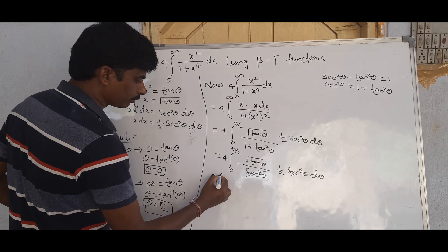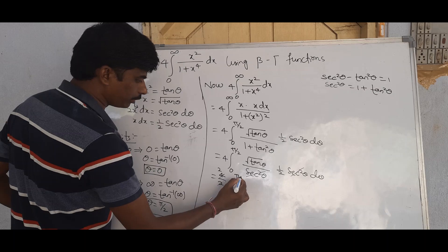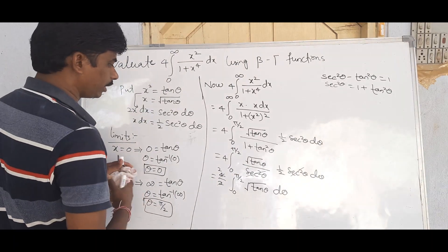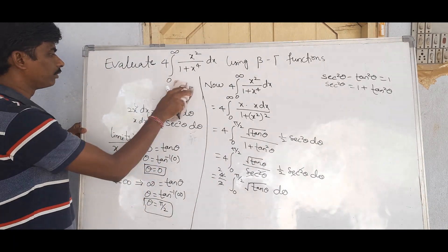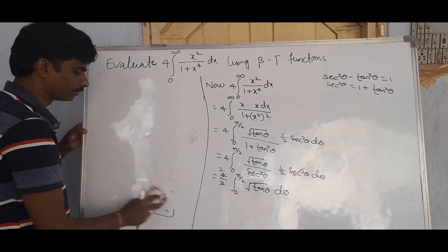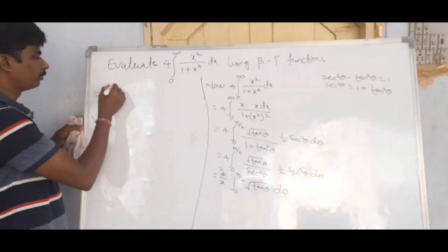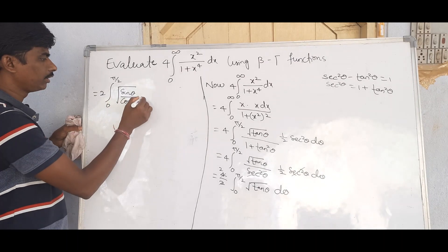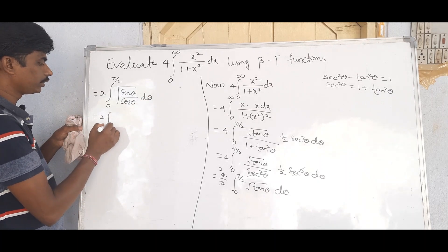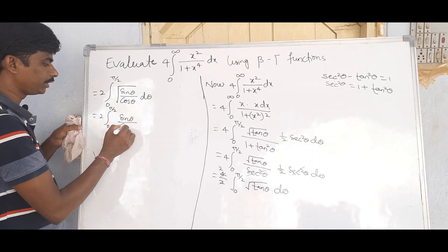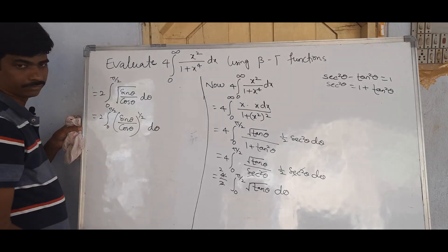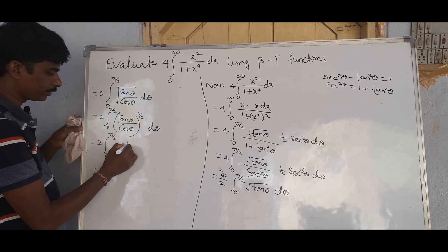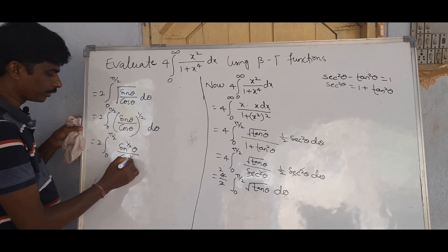After substitution, sec² θ cancels, leaving 4 × (1/2) × ∫₀^(π/2) √(tan θ) × (1/2) dθ. Writing √(tan θ) as √(sin θ / cos θ), this equals 2 × ∫₀^(π/2) sin^(1/2) θ · cos^(-1/2) θ dθ, or equivalently 2 × ∫₀^(π/2) sin^(1/2) θ · cos^(-1/2) θ dθ.